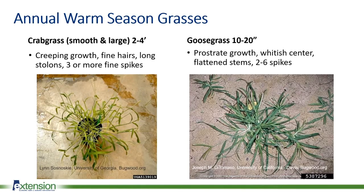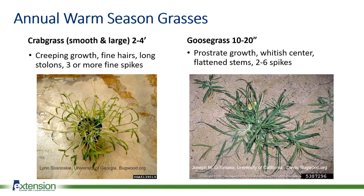There are also annual warm season grasses to manage. Crabgrass has a creeping growth with very fine hairs and long stolons running across the surface of the ground — the seed head has three or more very fine spikes. Goosegrass, on the other hand, lies very flat to the ground in what's known as a prostrate growth with a very whitish center and very flattened stems — one very good way to identify it. The seed heads also put up two to six spikes, but you're really looking for that whitish flattened stem.